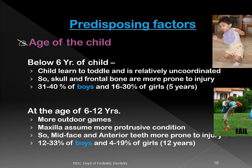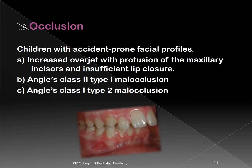Between ages six to twelve, predisposing factors include outdoor games and the more protusive maxilla — since the mandible is still growing in a forward and downward direction, the maxilla gets the brunt of any injury to the face. Boys start to show more prevalence of dental traumatic injuries due to more adventurous and aggressive sports.